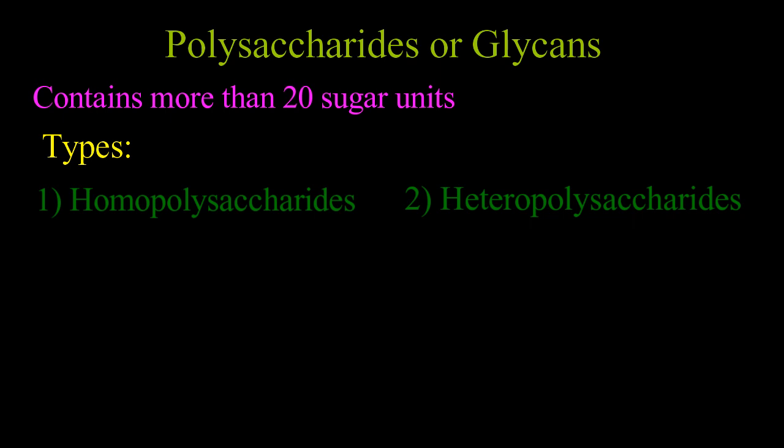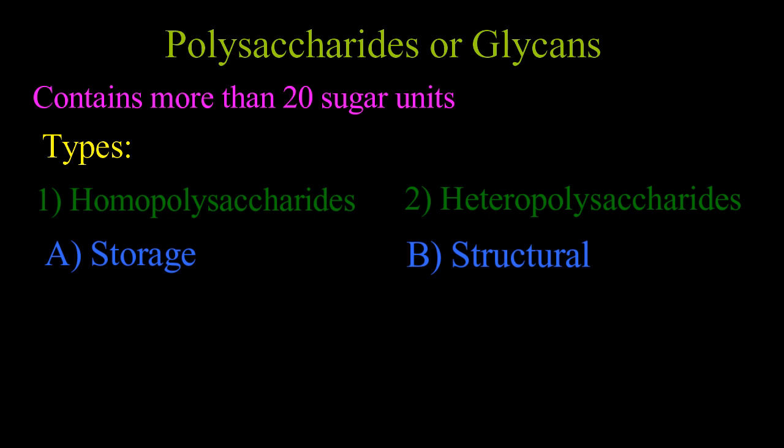Polysaccharides may be classified into storage and structural types on the basis of function. Storage polysaccharides like starch in plants and glycogen in animals act as a storage form of energy, while structural polysaccharides like cellulose in plants and chitin in animals act as supporting structures. Heteropolysaccharides like peptidoglycan in bacterial cell wall and dermatan sulfate, chondroitin sulfate, etc.